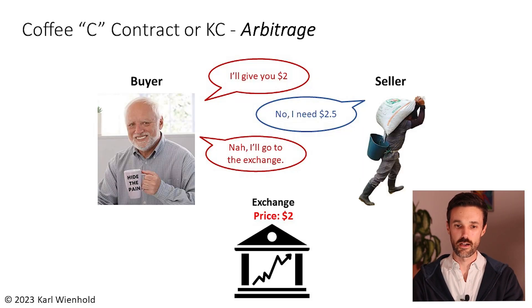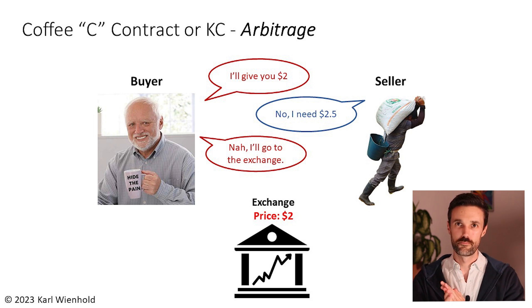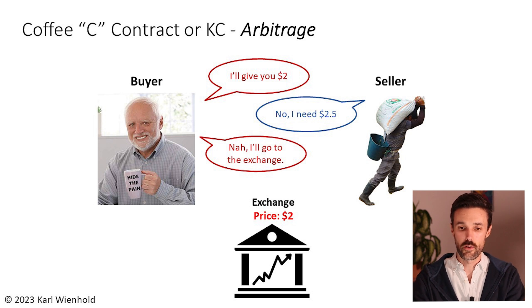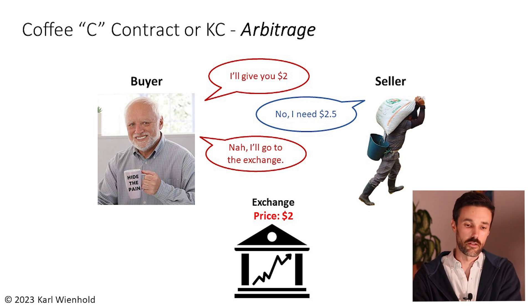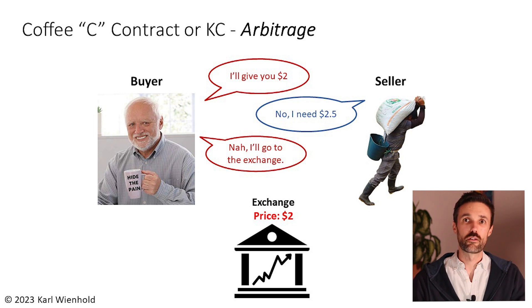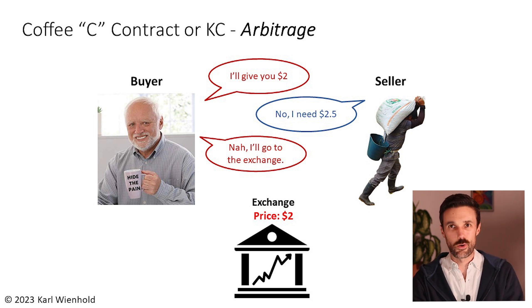Here's an example of what I mean by arbitrage — taking advantage of differences between the spot market and the exchange. Say we have a buyer who says, 'I'll give you $2,' and the seller says, 'No, I need $2.50 for this.' Well, if the buyer knows the exchange price is $2, he'll say, 'I'm not going to take that deal because I can get a better deal by going to the exchange.' And if that happens to every buyer that seller can access, the seller will either have to sell for $2 or have no buyer at all and end up going to the exchange. This is not an example of actually doing arbitrage, but how having the option of an exchange could lead to consistent prices off the exchange.